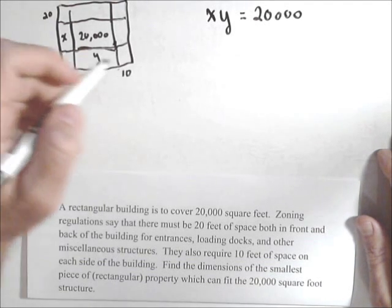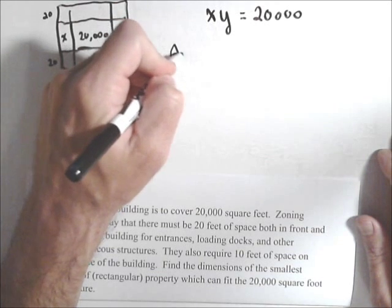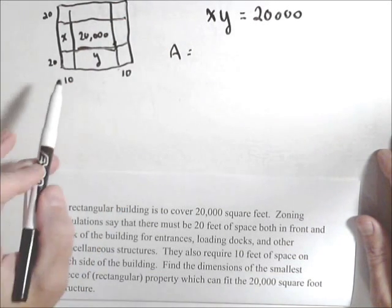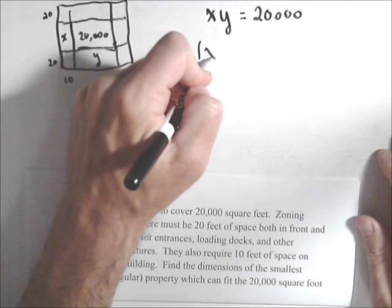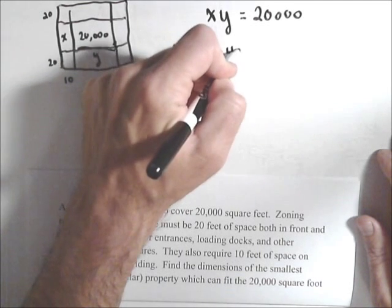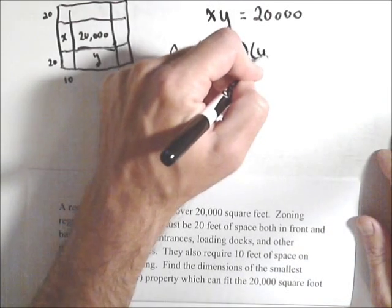So that's going to give us the area that we're trying to minimize. Because we have area equals (x + 40)(y + 20).